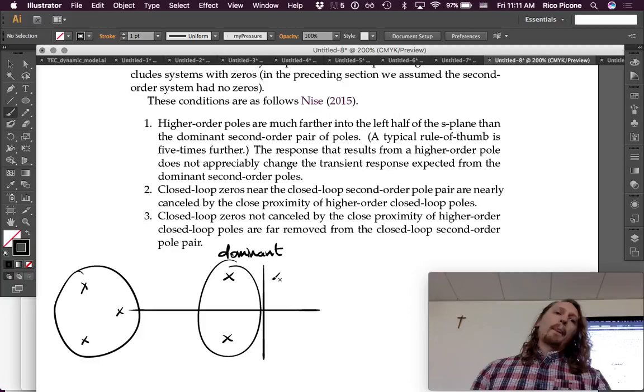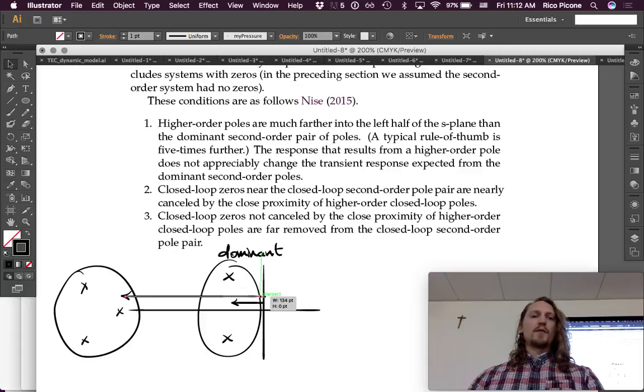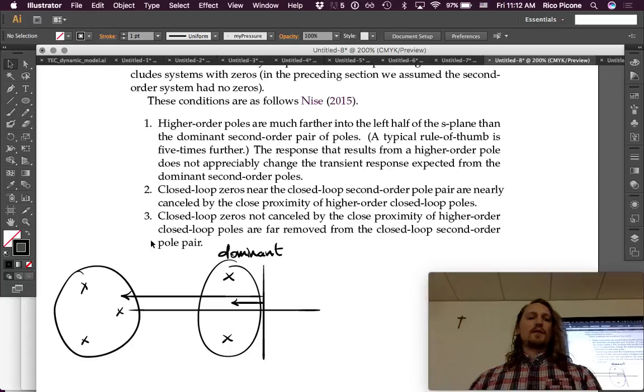And the rule of thumb that's used is that if this distance is one-fifth of this distance, then it's a pretty good approximation. That was supposed to go from the axis. So, if this is 5x or better, we're good.